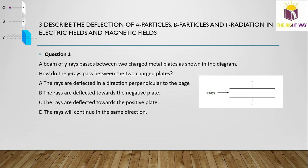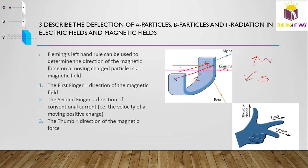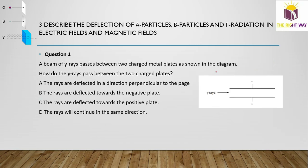Key things to remember: alpha and beta particles are deflected in opposite directions by both electric and magnetic fields. Gamma rays are not deflected by either field. Question 1 on deflection: A beam of gamma rays passes between two charged metal plates. Gamma rays continue in the same straight direction because they are not affected by electric fields.